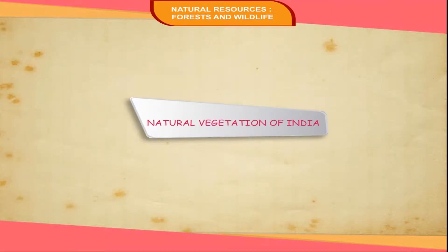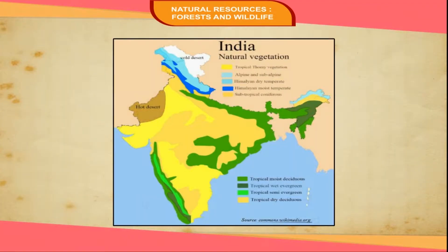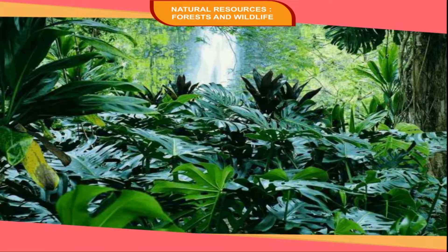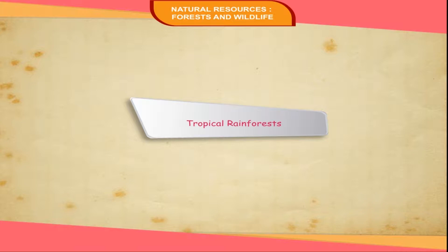Natural vegetation of India. India is a big country with a variety of climate. The variation in temperature and rainfall, together with the diversity of relief, has blessed India with these types of vegetation.